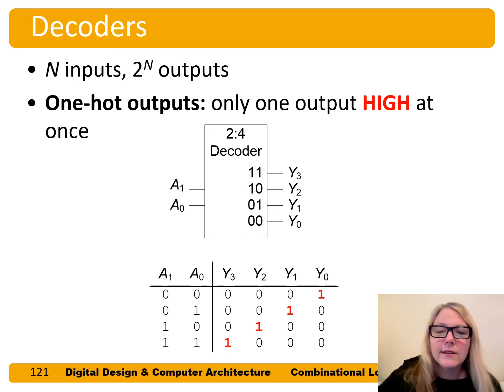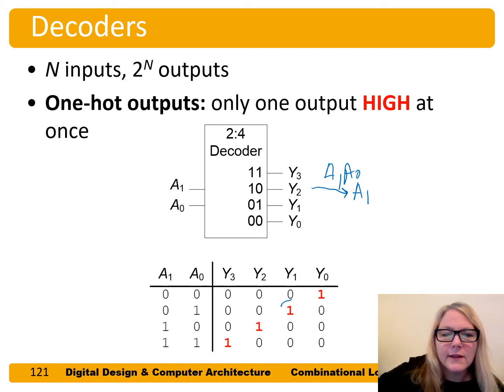And so you may notice that these are actually producing the minterms. So Y0 is equal to A1 bar and A0 bar. Y1 is equal to A1 bar and A0. So this is A1 and A0, Y3, Y2 is A1 and A0 bar. Y1 is A1 bar and A0, and Y0 is A1 bar and A0 bar.